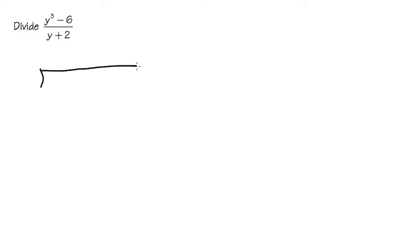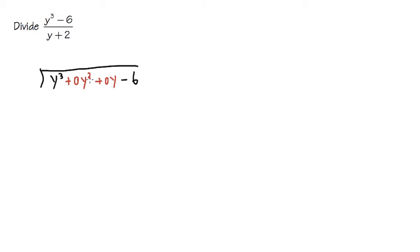I'm going to draw my long division symbol and put the numerator inside. As we can see, we have y to the third power. But do we have any y squared? We don't have any y squared, so I'm going to purposely write it down as plus 0y squared. This is kind of like a place value — we must have all the powers of y inside, so that when we subtract later on, everything will be organized. Also, do we have any y? No, so I'm going to put down plus 0y. And at the end, we have minus 6. This will be the proper setup for the top inside of the long division symbol.